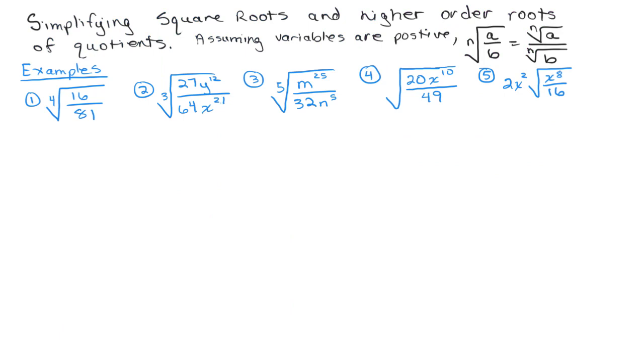Alright, we're going to simplify square roots and higher order roots of quotients. Assuming all variables are positive, we can use the rule that the nth root of A over B, which is a quotient, equals the nth root of A over the nth root of B. In other words, it's the nth root of the numerator over the nth root of the denominator.